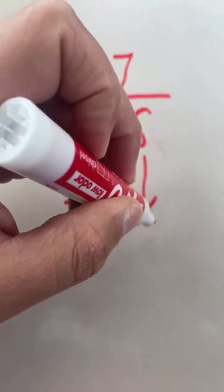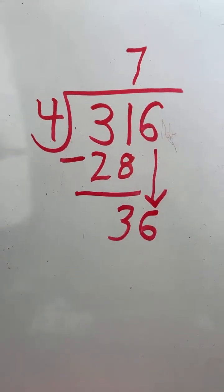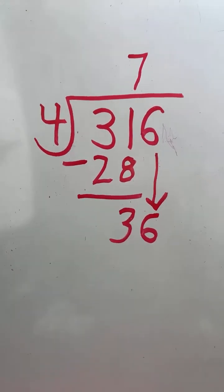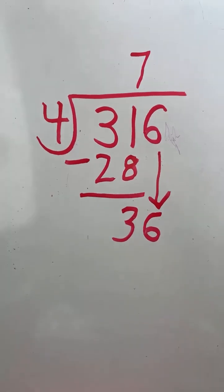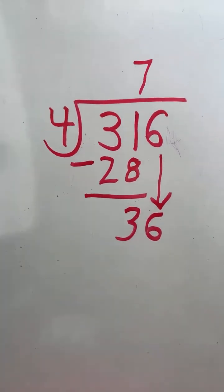Next, we bring down the 6, and now I have to figure out how many groups of 4 go into 36 to get our final answer. Now, I already know how many groups of 4 go into 36, but for those that don't, I'm going to show you how to find out.